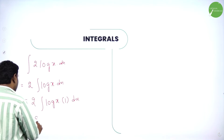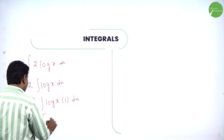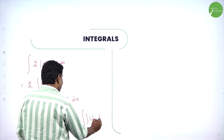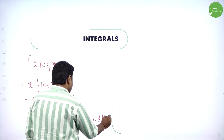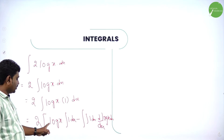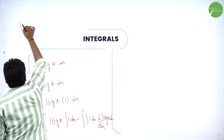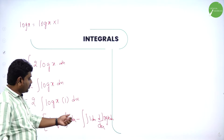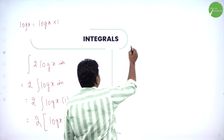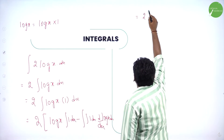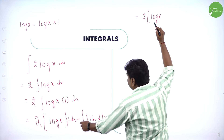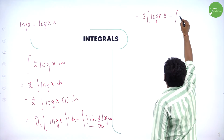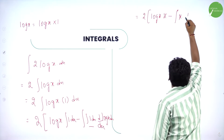I had only one function log(x), writing it as log(x)·1, a product of two functions. Now apply product rule: first function into integration of second function, minus integration of integration of second into derivative of first. So: 2 outside, log(x) into integration of 1 dx is x, minus integration of x into d/dx of log(x). Differentiation of log(x) is 1/x.